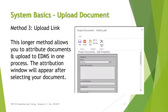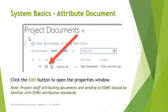The attribution window shown here will appear after selecting your document. You can also attribute documents that were previously uploaded to the document library by clicking the edit symbol to the left of the document name. This procedure is used when the document has not already been attributed during the original upload process using the upload link. Note that the project staff who are attributing documents and sending them to EDMS should be familiar with the attribution standards.